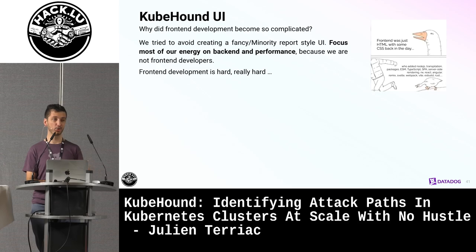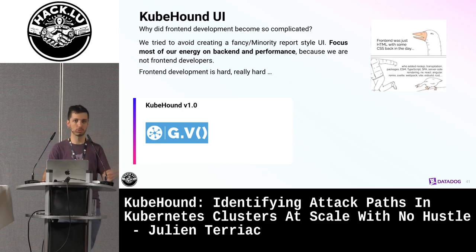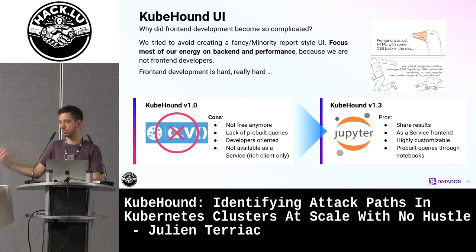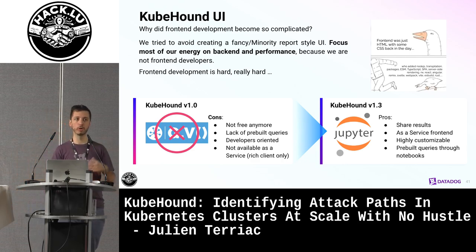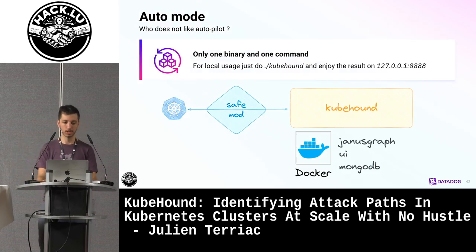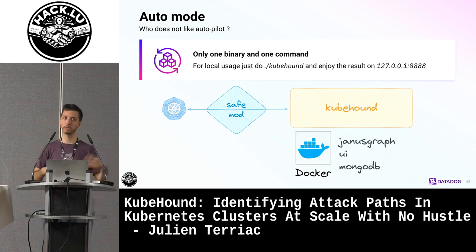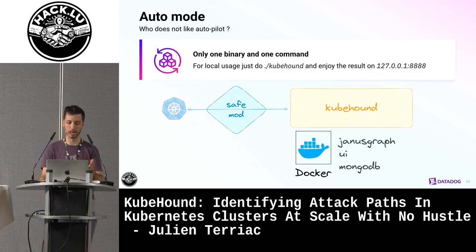One last thing about user experience: we are not front-end developers and are kind of afraid of front-ends. We prefer back-end. We tried using an application called G.V, which wasn't really suited to our needs, so we moved to Jupyter Notebook. Now we have a Jupyter front-end you can host and run pre-built notebooks to analyze your Kubernetes cluster. And to make your life easier, all you have to do is have Docker on your machine. Download the binary, run it, and everything is done for you — we spin up the containers, do the ingestion, and make the UI available, so you don't have to deal with any boilerplate.